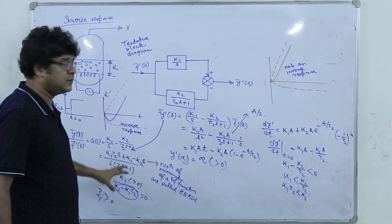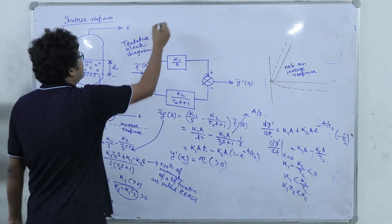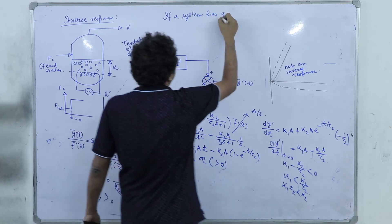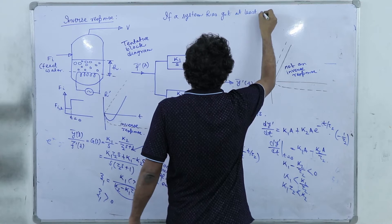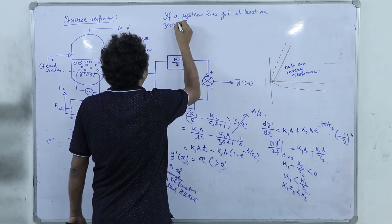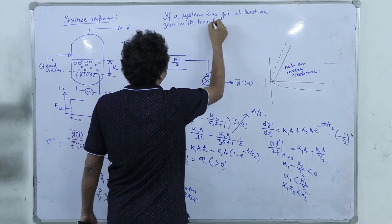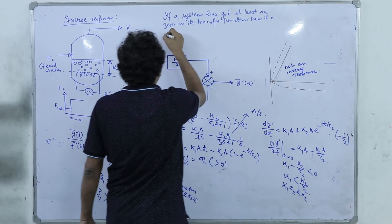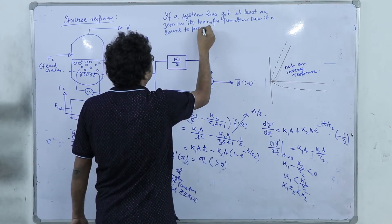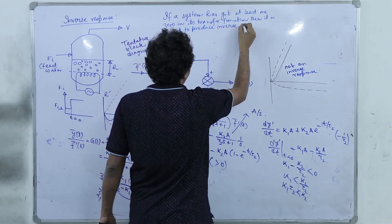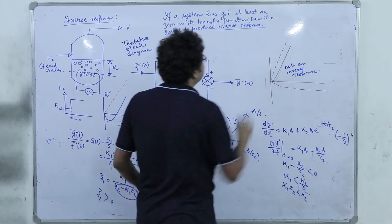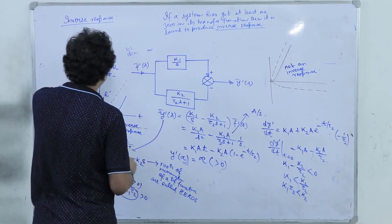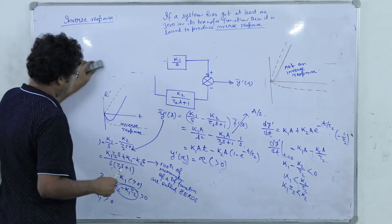This is actually a universal condition: if a system has at least one positive zero in its transfer function, it is bound to produce inverse response. We have to justify this statement from other similar systems which are prone to give inverse response.